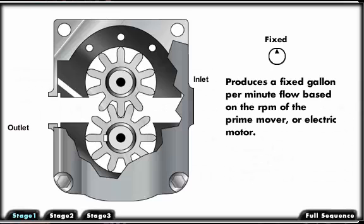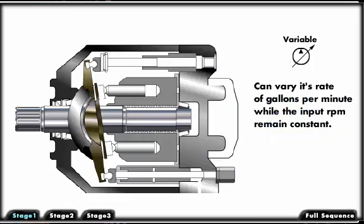There are two types of positive displacement hydraulic pumps: a fixed pump, which produces a fixed gallon per minute flow based on the RPM of the prime mover or electric motor, and a variable pump, which can vary its rate of gallons per minute while the input RPM remain constant.